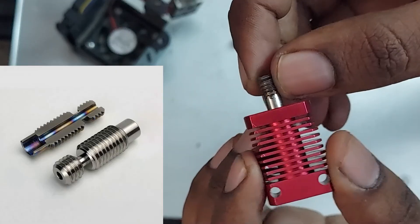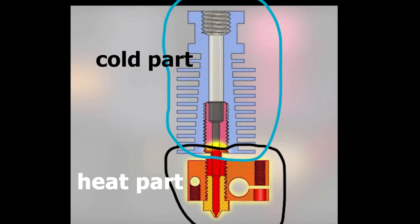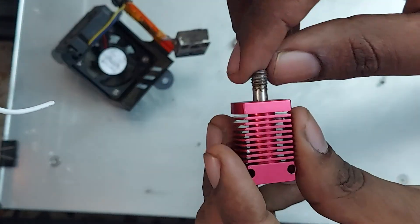This silver one is called heat break. There are two different parts of a hotend - one is heat pot and one is cold pot. This heat break is separating the cold pot from the heat pot.